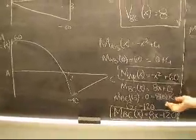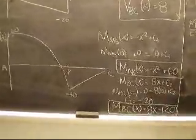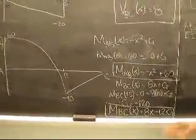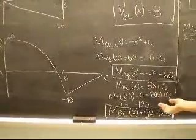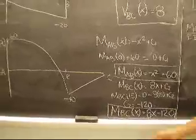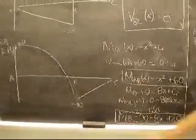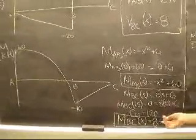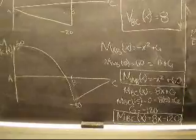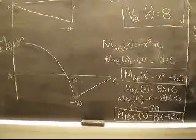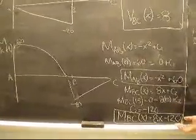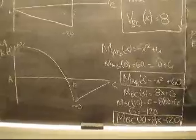Our moment equation from B to C is 8x plus C2. We solve for C2 using our known that the moment at C is 0, giving us C2 equaling negative 20, which gives us the final moment equation from B to C.